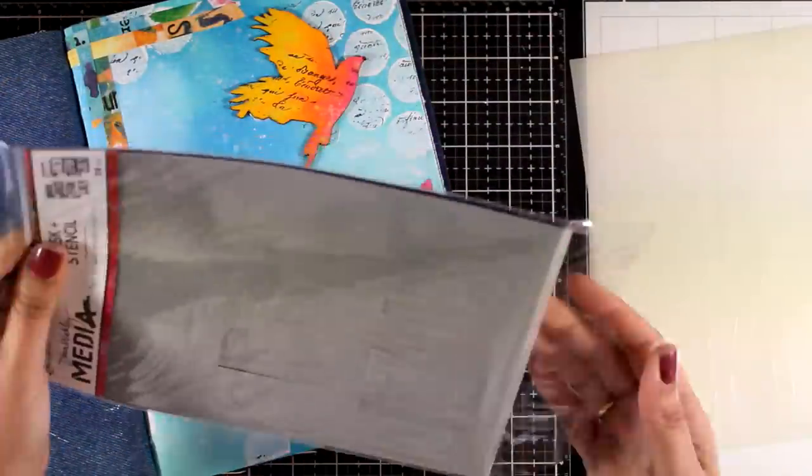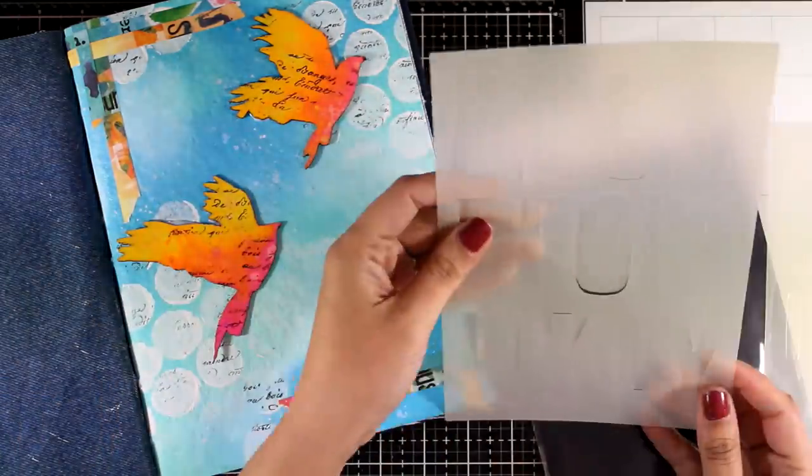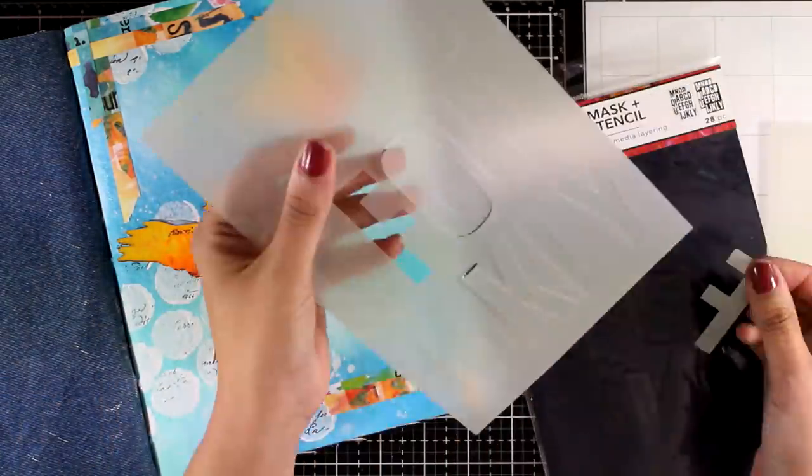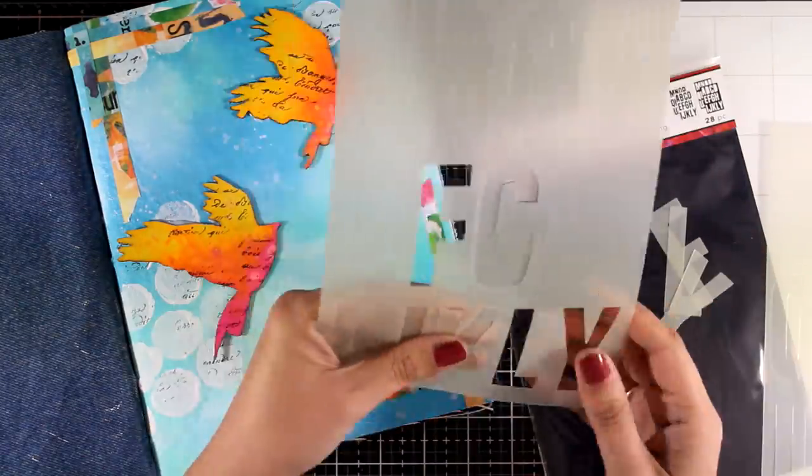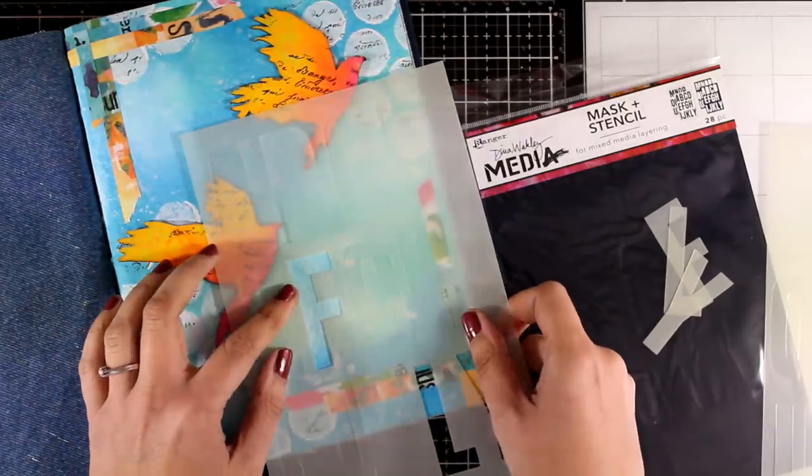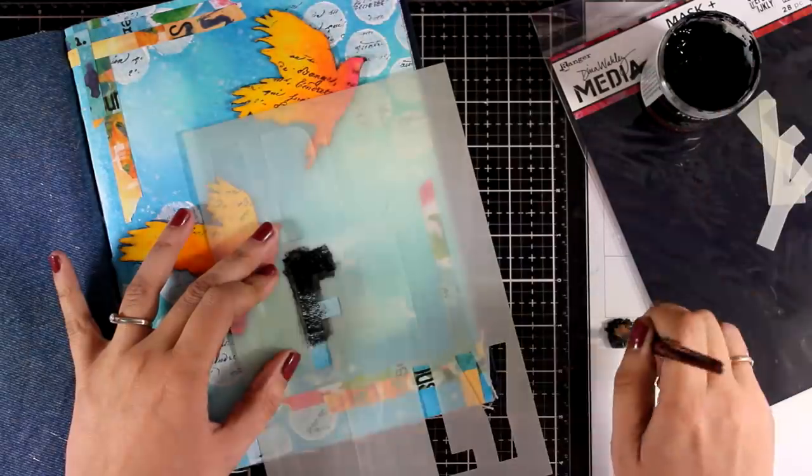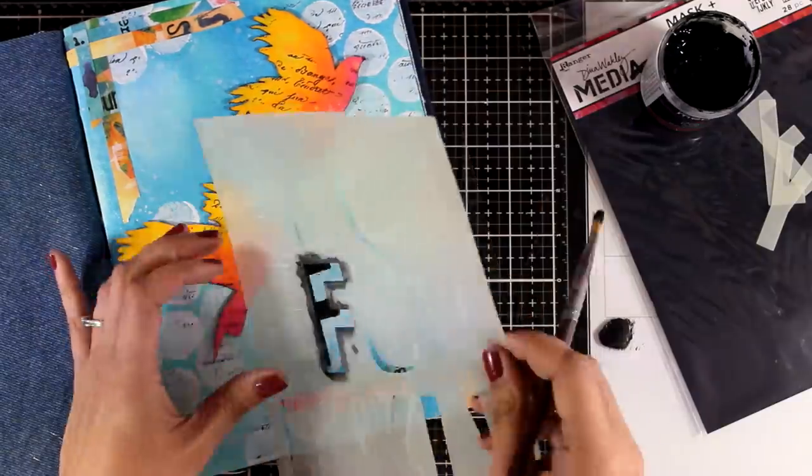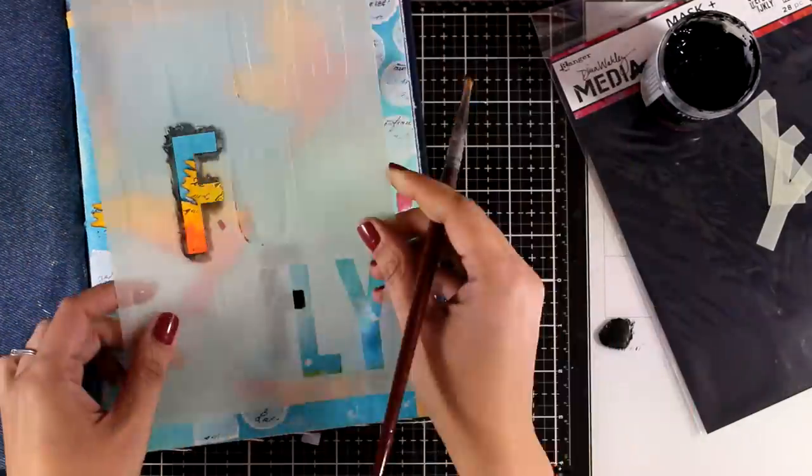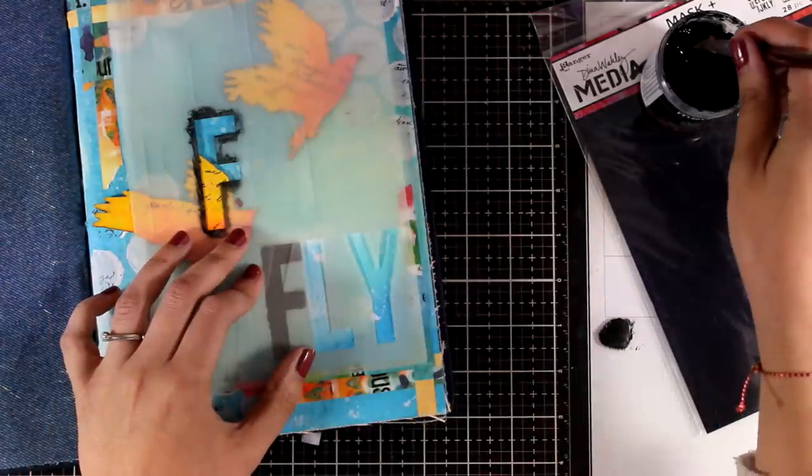And on my journals, I always like to have a motivational quote. I usually call my art journals quote journals. And this is the case with this page as well. So, this time, I'm going with a quote that says your wings already exist. All you have to do is fly. I want to have the word fly big, bold, and to make a statement on my page. That's why I will use black color and go over this alphabet stencil to spell the word fly.